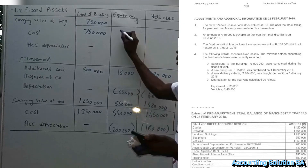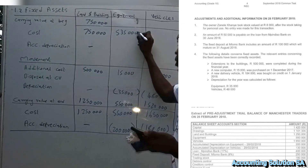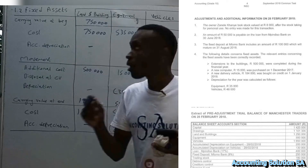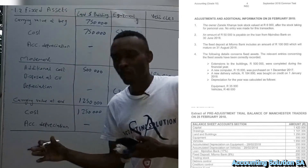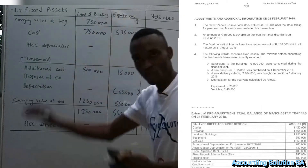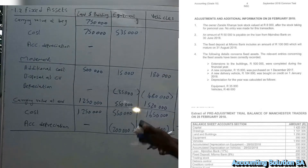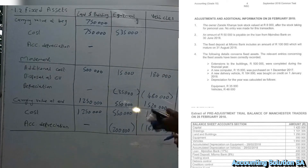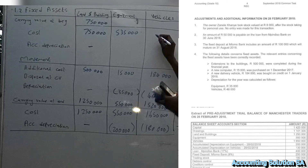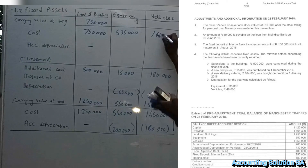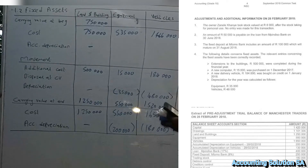To get the cost price at the beginning, we take the year-end balance and subtract what was added during the year. The tricky part about the fixed assets note is that we are working in reverse — not from top to bottom. So for equipment: 550 000 minus 15 000 gives 535 000. For vehicles: 1 650 000 minus 184 000 gives 1 466 000.